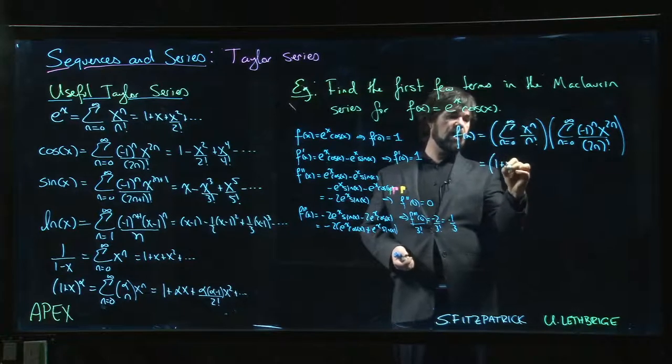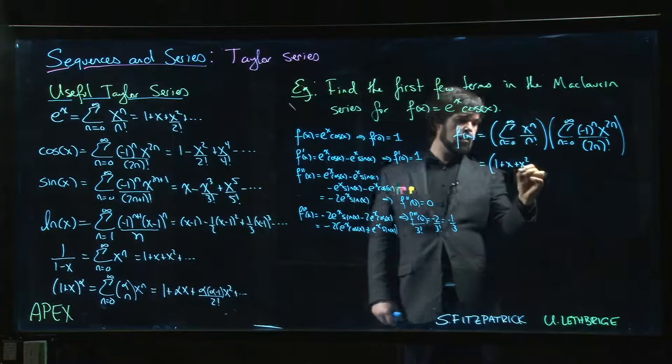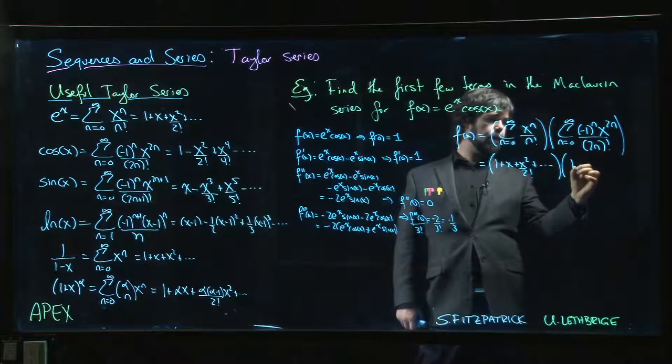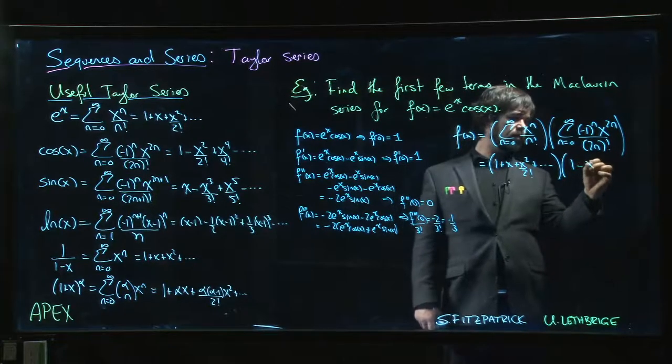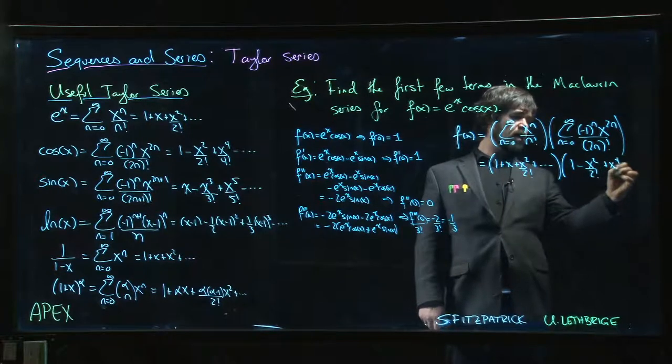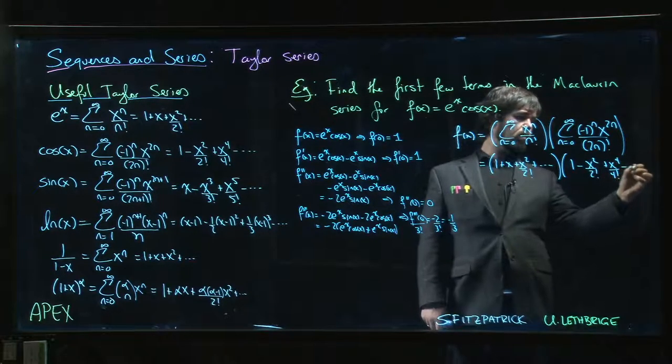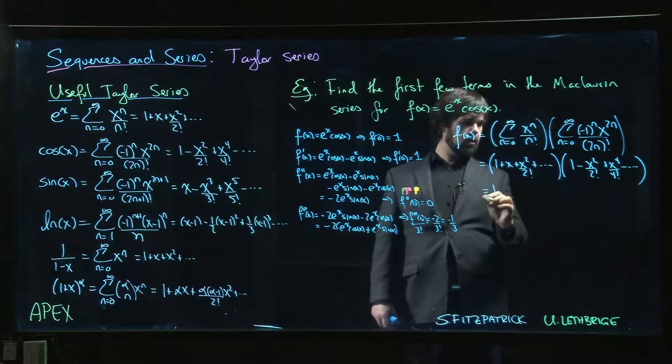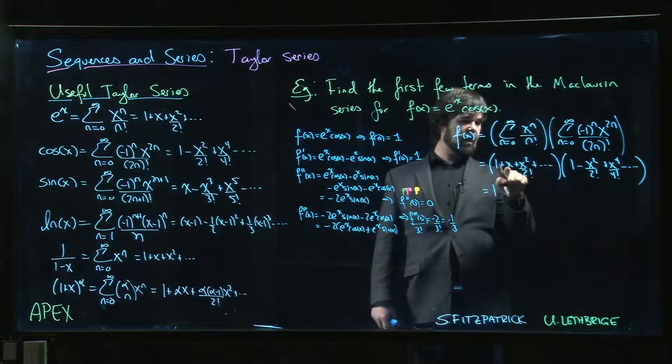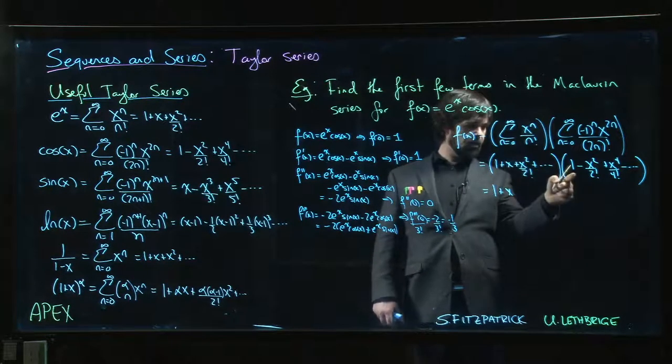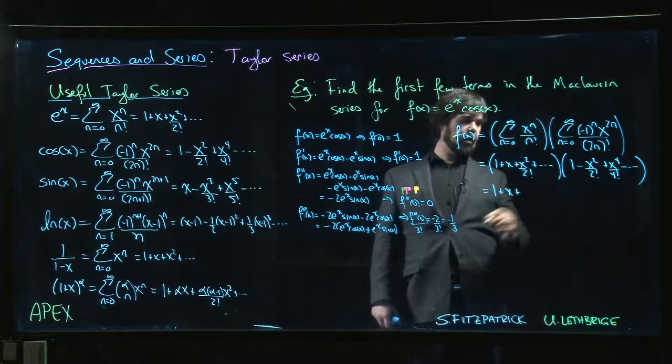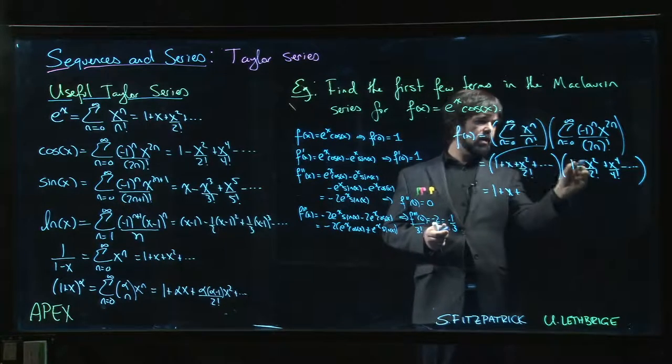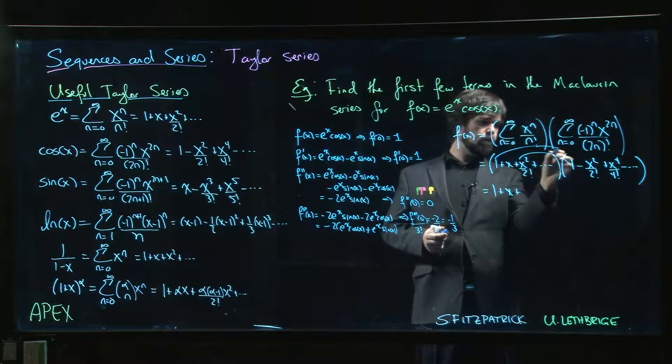So over here we get 1 plus x plus x squared over 2 factorial and so on. Then we have 1 minus x squared over 2 factorial, x to the 4 over 4 factorial, and so on. And so we start multiplying things out. We have 1, we have x, and that x is going to be the only time we get x. And then we look for, okay, for x squared. How do we get x squared? There's actually two ways to get x squared. We can go here or we can go there.